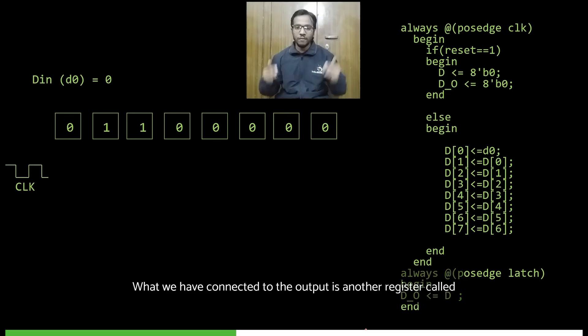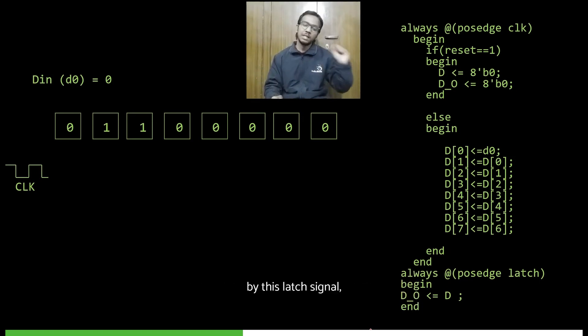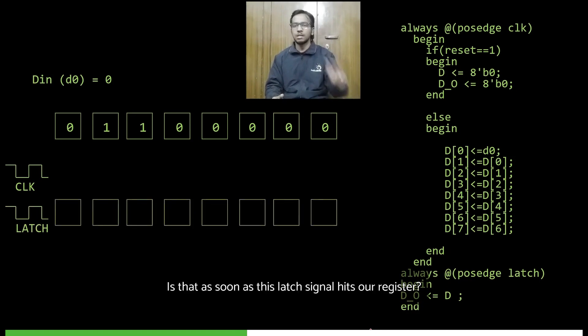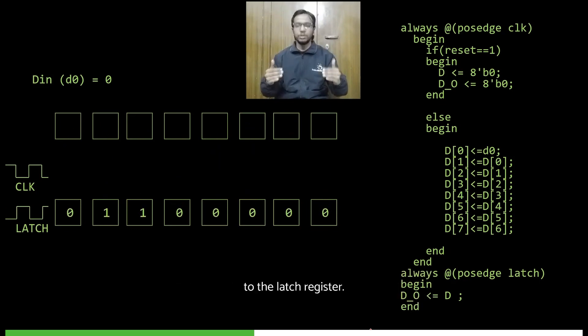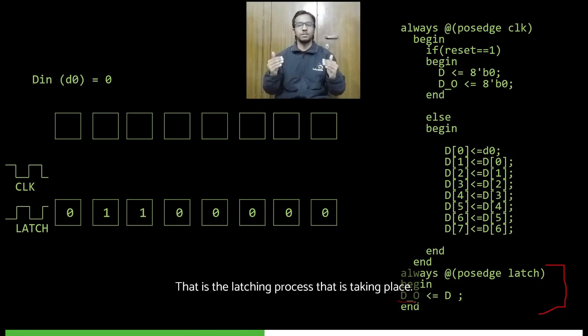Now, all this shifting is wasteful because this shift register is not connected to the output. What we have connected to the output is another register called the latch register, and this register is controlled by this latch signal. All that happens is that as soon as this latch signal hits our register, the contents of our main shift register get copied to the latch register. This is what happens in the last few lines of the code—you can see D output gets assigned the value of D. That is the latching process that is taking place.